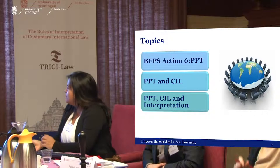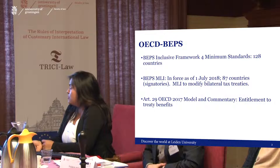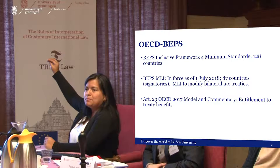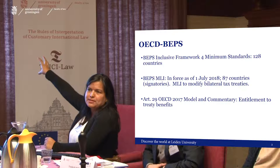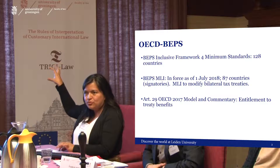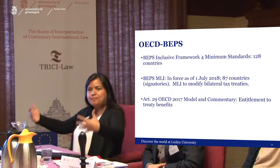So, the principal purpose test — and as I mentioned, customary international law and interpretation. We already have 128 countries out of the 193 countries in the world. It's important to distinguish the multilateral instrument from the inclusive framework, which in principle is soft law. The 128 countries have these four minimum standards; there is no document they signed, but they have committed to implement the BEPS four minimum standards. The multilateral instrument is a convention — an international treaty that has been signed and ratified.